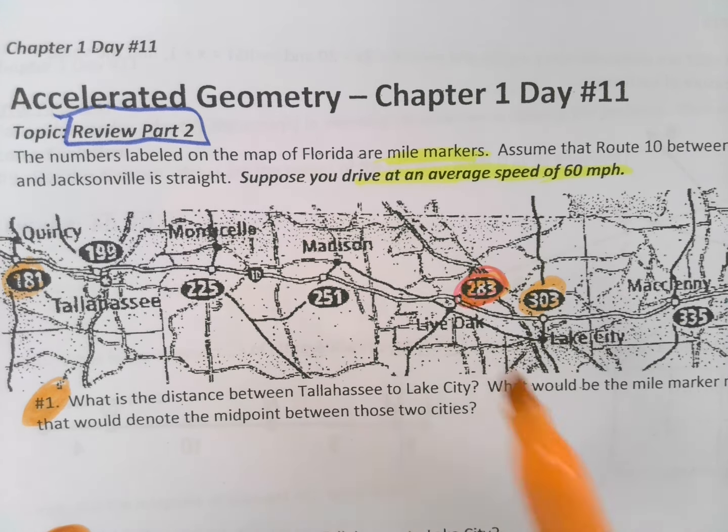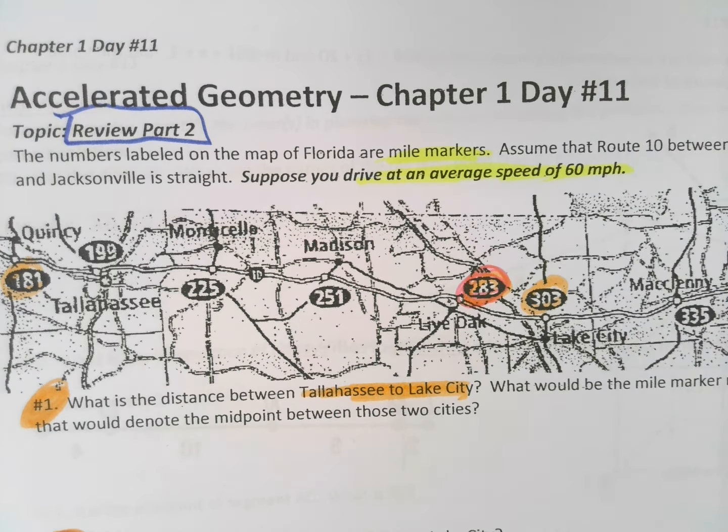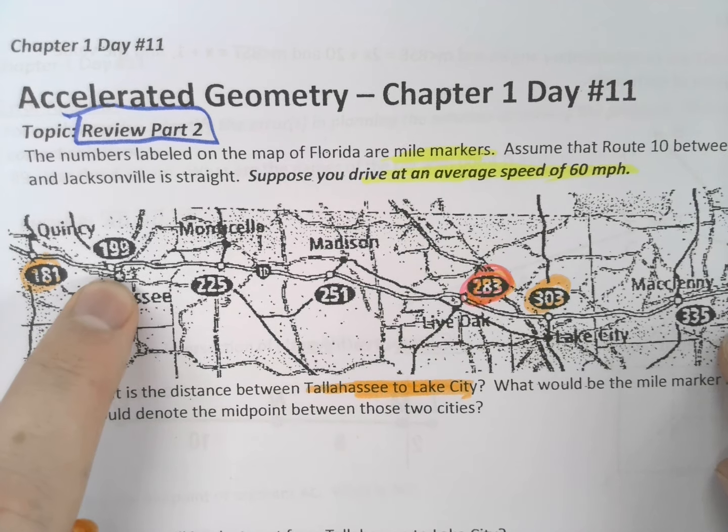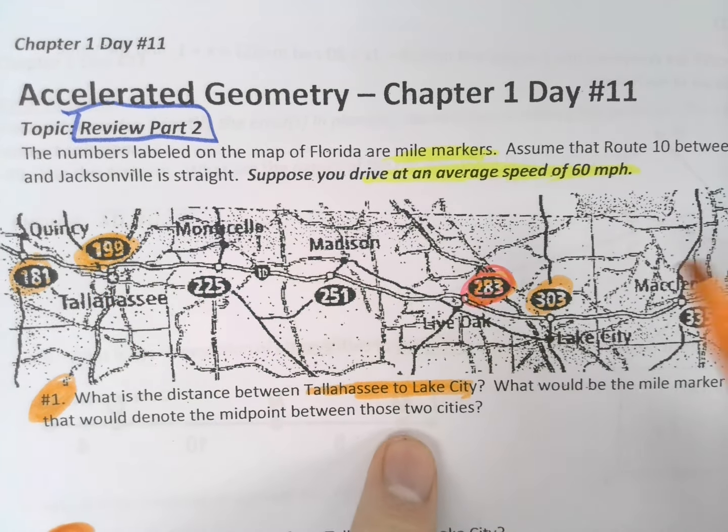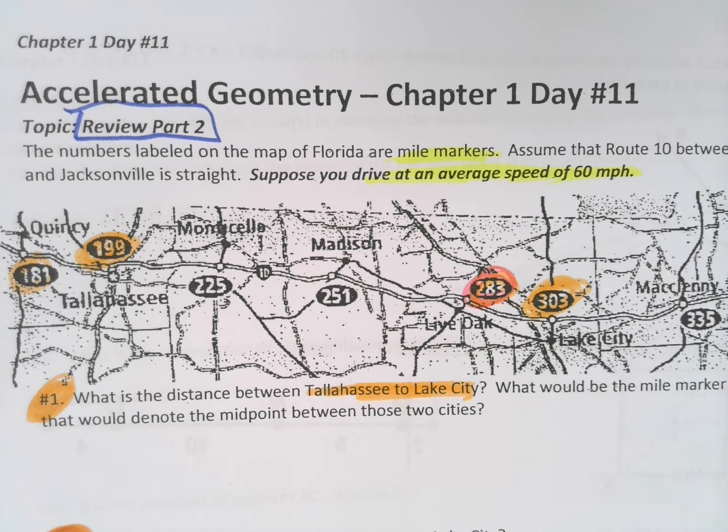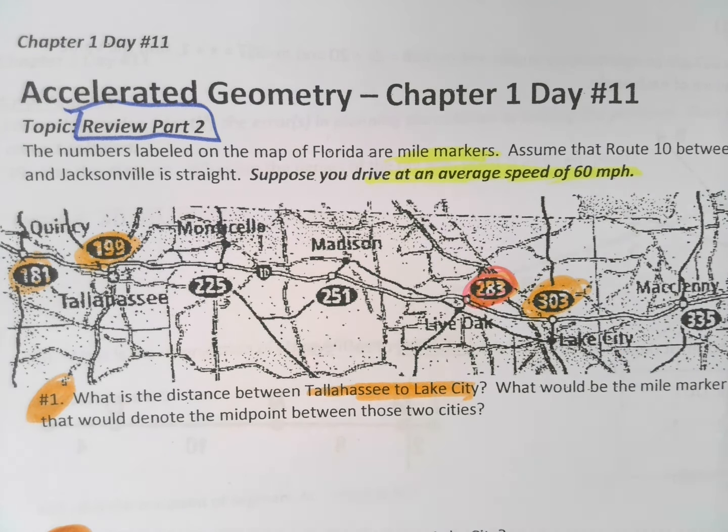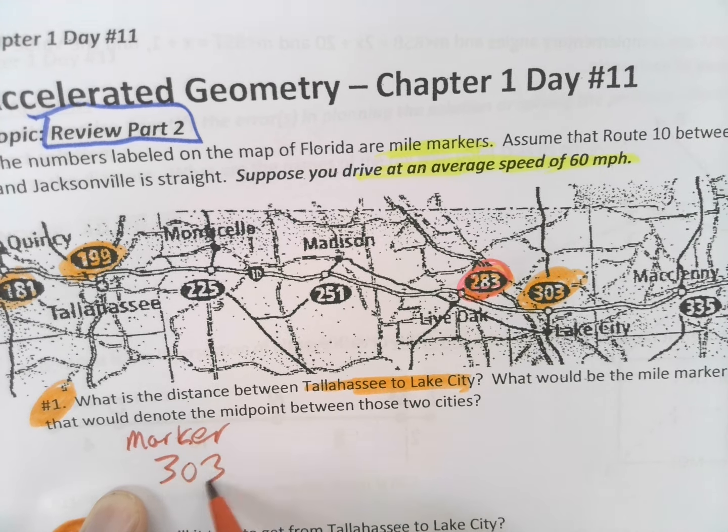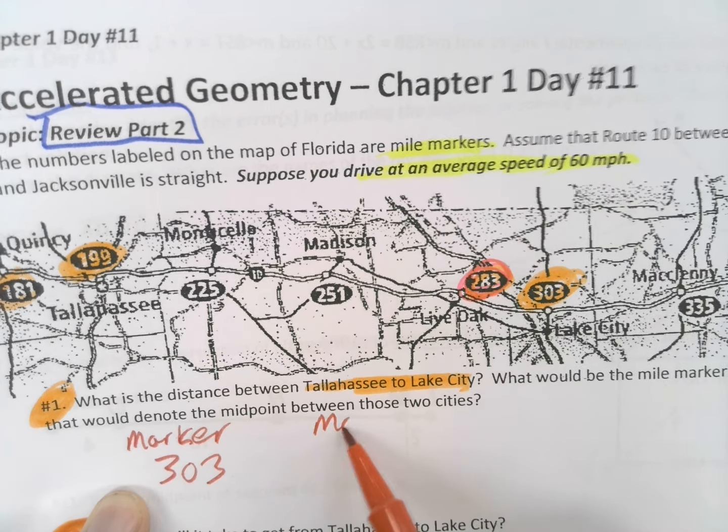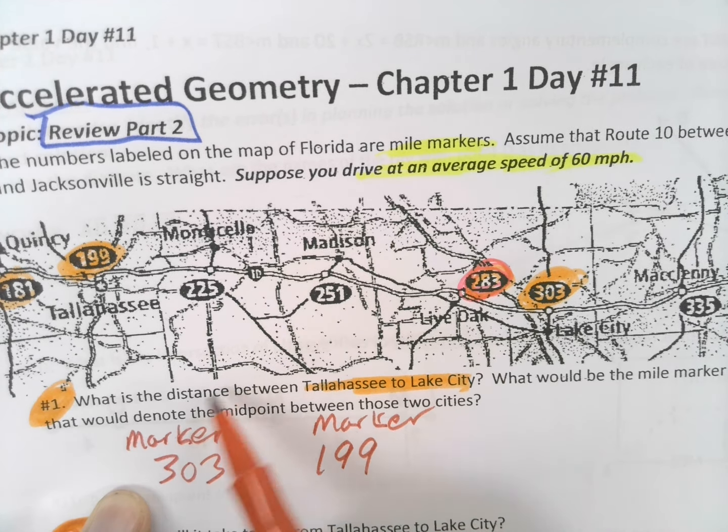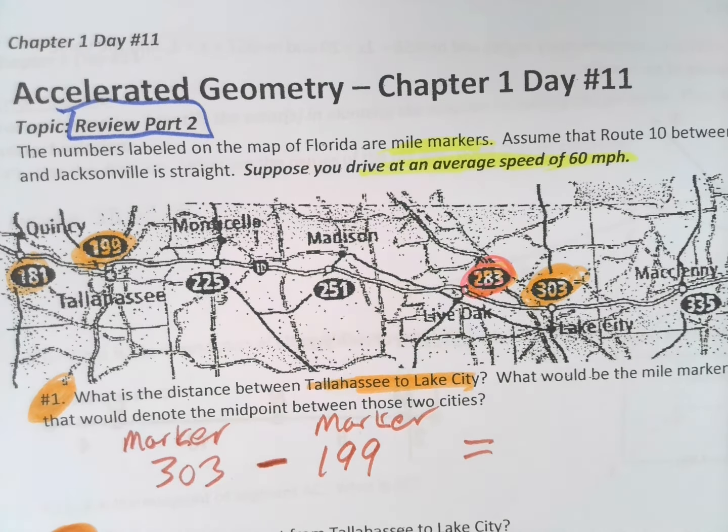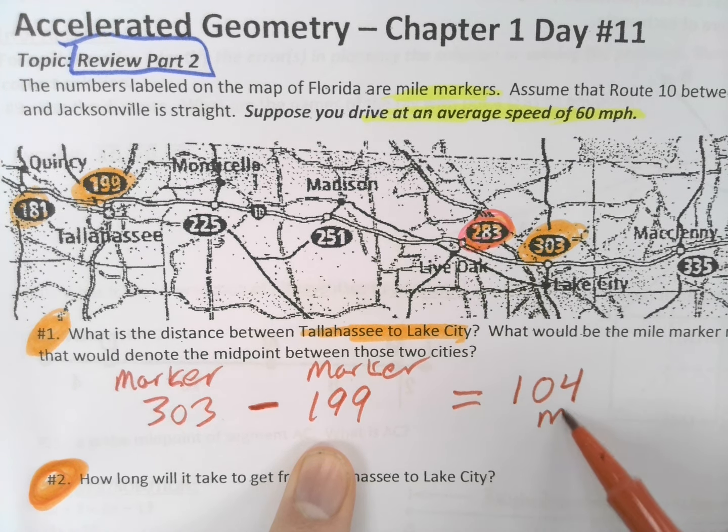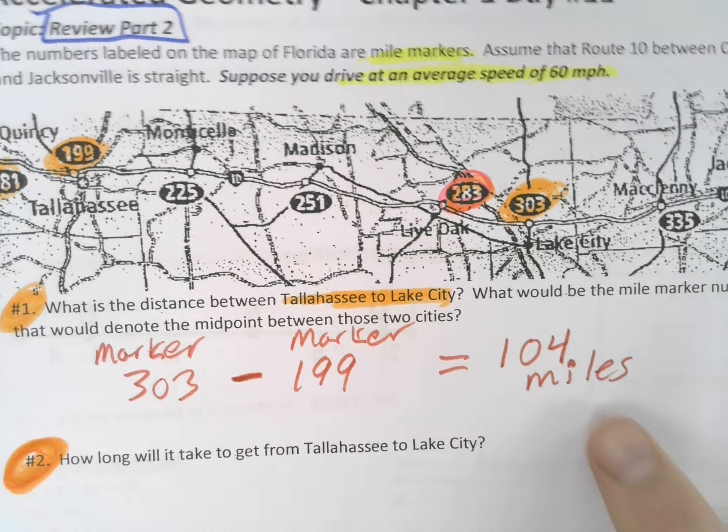So what is the distance between Tallahassee and Lake City? This is a simple matter of counting up the mile marker. Tallahassee is at 199, and we're going to Lake City. If Lake City is marker 303, and Tallahassee is marker 199, if you want to know the distance, just subtract them. 303 minus 199, and you end up with 104 miles. That's our difference here.